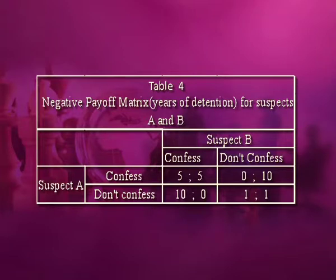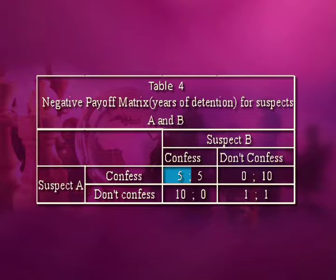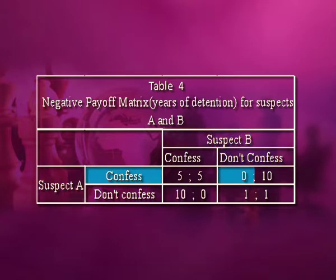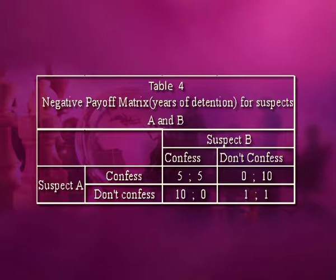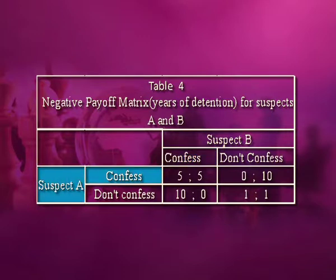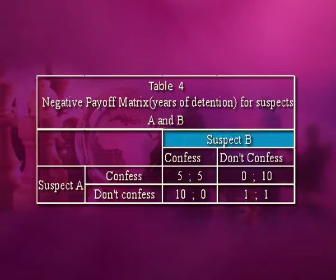The payoff matrix in terms of years of imprisonment is shown in this table. This table shows that the dominant or the best strategy for the suspects is to confess. Thus, if suspect B confesses, suspect A gets five years in jail if he confesses and 10 years if he does not confess. If suspect B does not confess, suspect A goes free if he confesses and gets one year imprisonment if he does not confess. Thus, irrespective of the strategy adopted by suspect B, the dominant strategy that A can adopt is to confess. Similarly, for suspect B also, the dominant strategy is to confess. If suspect A confesses and suspect B also confesses, then B gets jail term for five years; and if B does not confess, he gets jail term for full 10 years. On the other hand, if suspect A does not confess and suspect B confesses, B does not go to jail; but if B does not confess, he gets jail term for one year. Therefore, confessing is also the best or dominant strategy for suspect B.